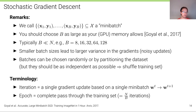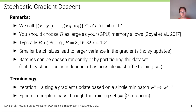An iteration is a single gradient update based on a single mini-batch — one gradient update step of the algorithm. An epoch is a complete pass through the training set: if we have mini-batch size B and dataset size N, we have N/B iterations per epoch, statistically seeing every data element once.